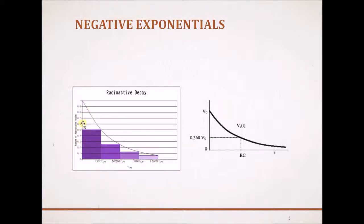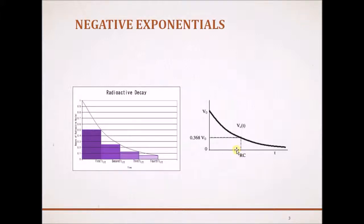That is, the mass of the radioactive nuclei — the mother nuclei — after a certain time t: after every half-life, the mass basically becomes half of the original or the previous mass. And as time increases, the mass reduces exponentially. Another example of a decaying exponential is the response of an RC circuit, where the voltage basically reduces to a very small value as time increases.